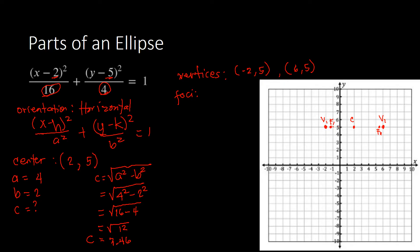Identifying the coordinates of the foci: the first one is at approximately (negative 1.46, 5), and the other one is at approximately (5.46, 5). Those are our foci coordinates.